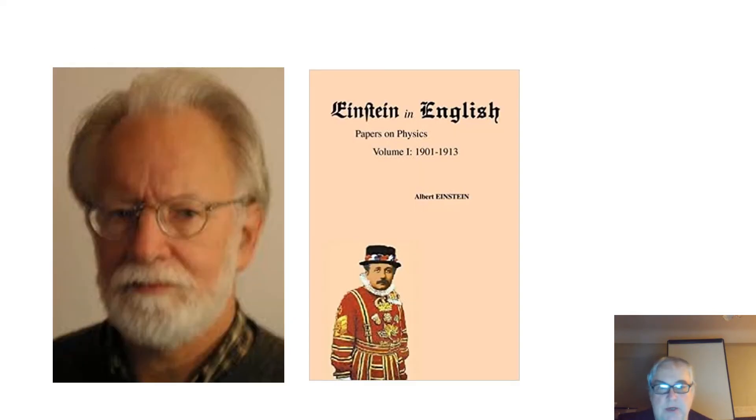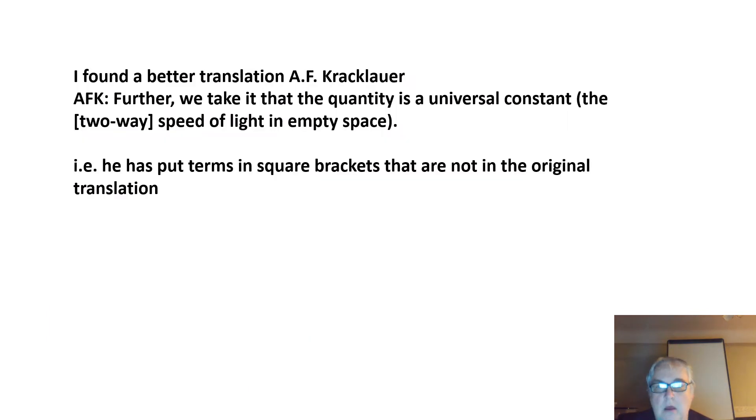But I found a better translation from this person. According to this person, the translation is: 'Further, we take it that the quantity is a universal constant—the two-way speed of light in empty space.' Now, what he's got in square brackets, 'two-way', is not in the original German. He's making that interpretation and adding it to the translation.